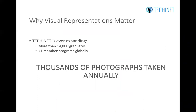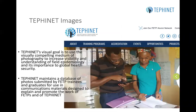So why do visual representations matter, and why do they matter for TEPHINET? TEPHINET is ever-expanding, with more than 14,000 graduates and 71 member programs globally, and thousands of photographs are taken annually. These images are used for TEPHINET in a number of different ways, as you see here in a screenshot from TEPHINET's website. TEPHINET's visual goal is to use the visually compelling medium of photography to increase visibility and understanding of field epidemiology and its importance to global health security. TEPHINET maintains a database of photographs submitted by FETP trainees and graduates for use in communications materials designed to explain and promote the work of FETPs and of TEPHINET.